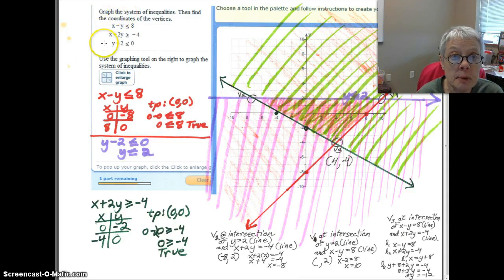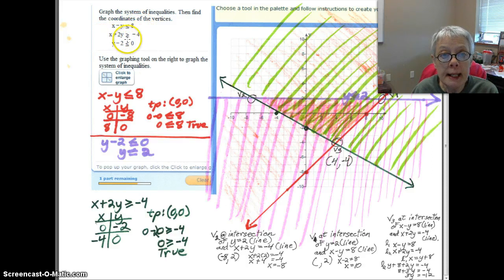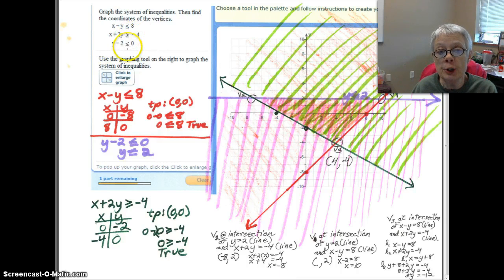So here is our system of inequalities. X minus Y is less than or equal to 8, X plus 2Y is greater than or equal to negative 4, and Y minus 2 is less than 0. When you're doing this by hand it's so much easier to do it with colors, so I did.